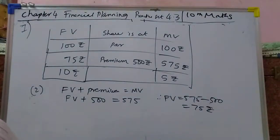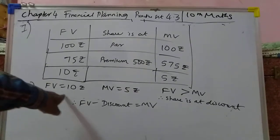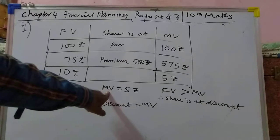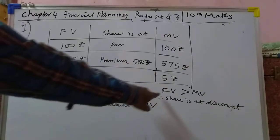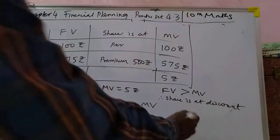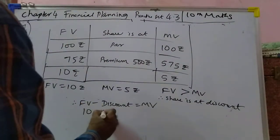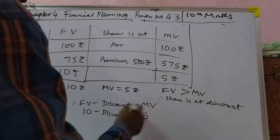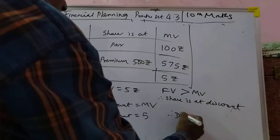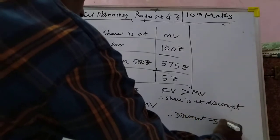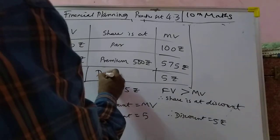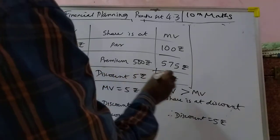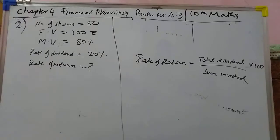Go to page number 98 — FV means face value, MV means market value. Here, face value is 10 rupees and market value is 5 rupees. Since face value is greater than market value, the share is at a discount. Using the formula: 10 minus discount equals 5, so discount equals 5 rupees.